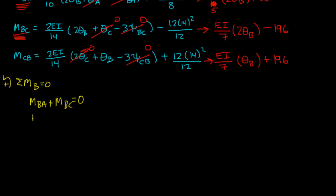That means MBA was EI over 5 times 2 theta B plus 30. And MBC was EI over 7...